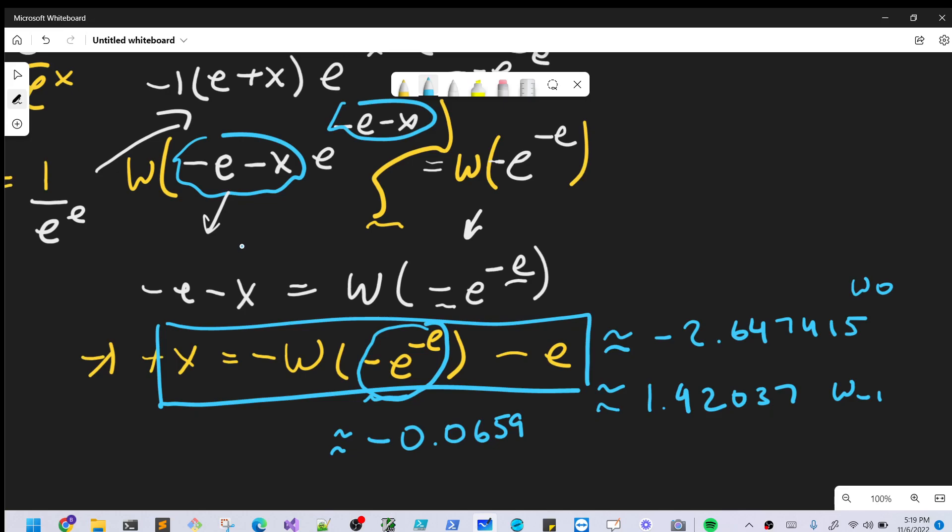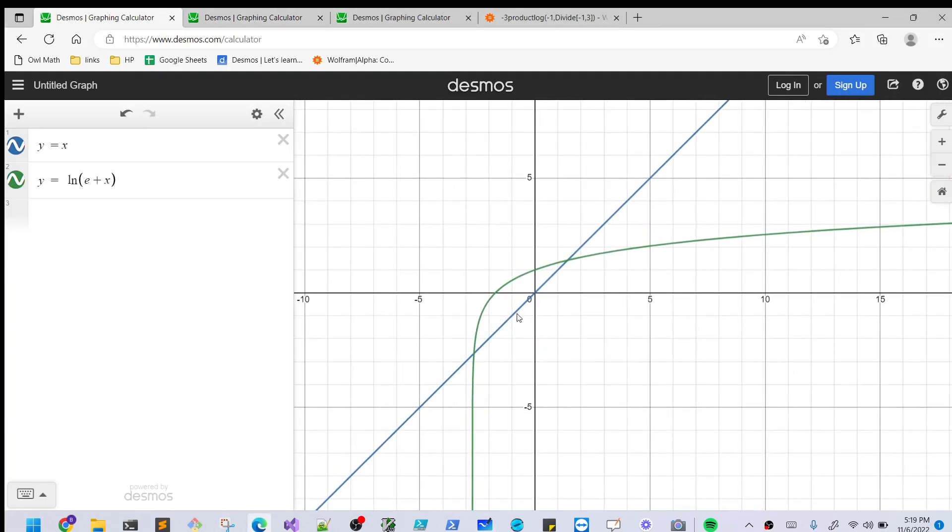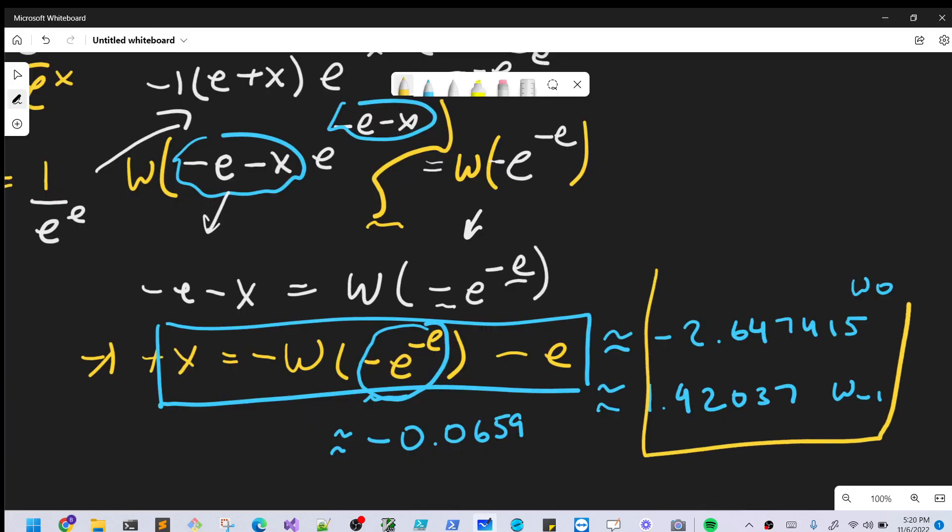And we can actually see this on the graph of the function itself, so let's look at that as well, so it's clear to see. This is our y equals x, but it's just a line for the x side, but then for our ln(e+x), we have this curve. You'll see they intersect at two points, they intersect here at 1.42, which is one of our solutions, and they also intersect here at -2.647, the other solution. So we have our two real solutions.